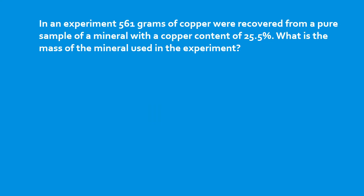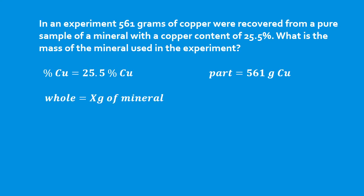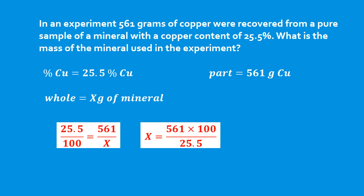In an experiment, 561 grams of copper were recovered from a pure sample of a mineral with a copper content of 25.5%. What is the mass of the mineral used in the experiment? We're given a percent of copper — 25.5 — and the part of copper is 561 grams. We want to know the whole: how many grams of the mineral we had. So 25.5 over 100 equals 561 over x. Solving for x: 561 times 100 divided by 25.5 gives us 2,200 grams of the mineral.